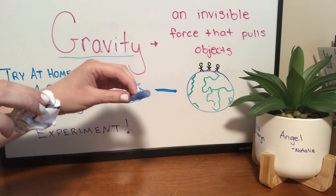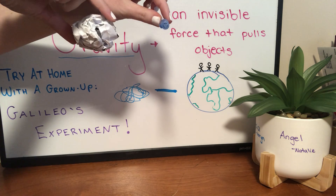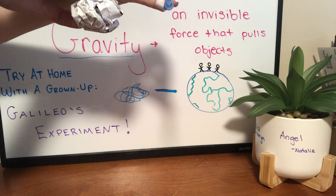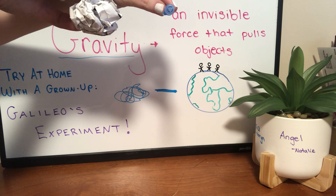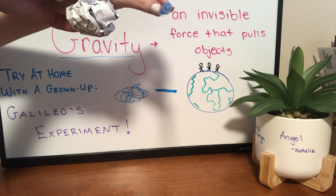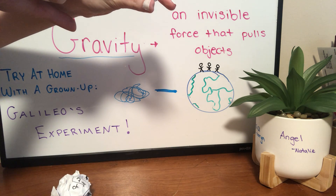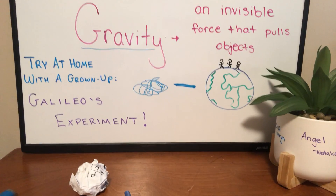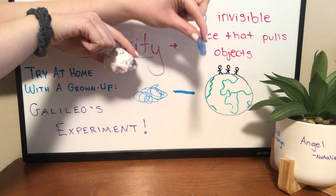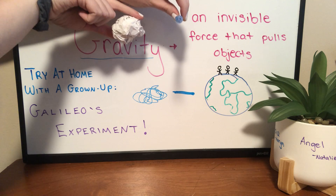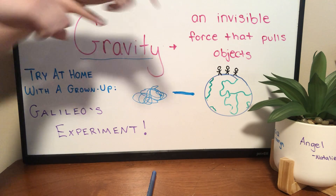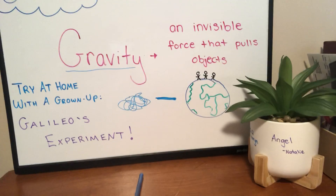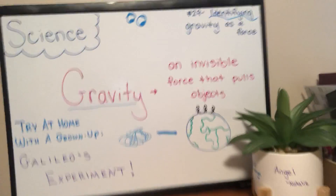Pen in one hand, paper in another. I'm going to get them to the same height — I don't want anyone cheating. I'm going to let them go; they're going to fall and hit the table at the exact same time if Galileo's experiment is right. Three, two, one. Let's try again with a better view. Three, two, one. Yeah, they hit the table at the exact same time. Galileo is right.